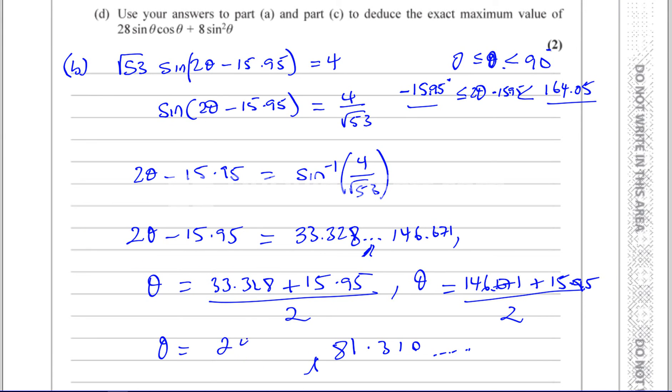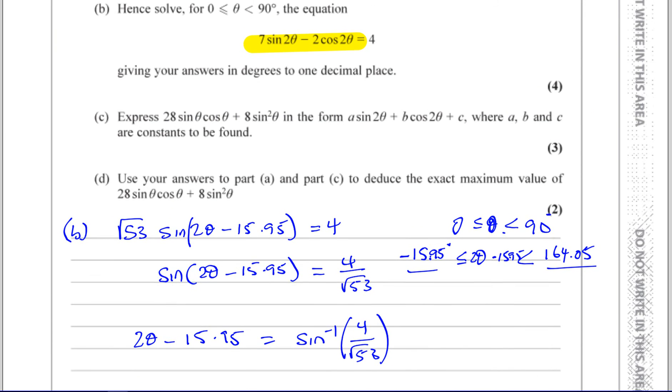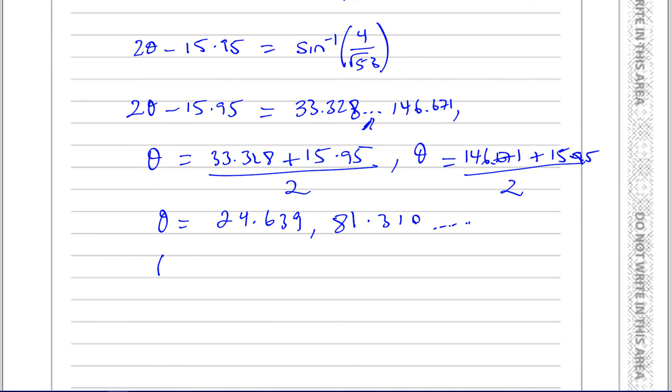Then we have to check to see how we have to round the answer. Sometimes they give you a particular instruction as to how to round it. What does it say, part B? Giving answers to degrees in one decimal place. That's actually the standard way of writing degrees to one decimal place. So you've got 24.6 degrees and you've got 81.3 degrees, and there we have our final answer for this part of the question. Next part in the next video.